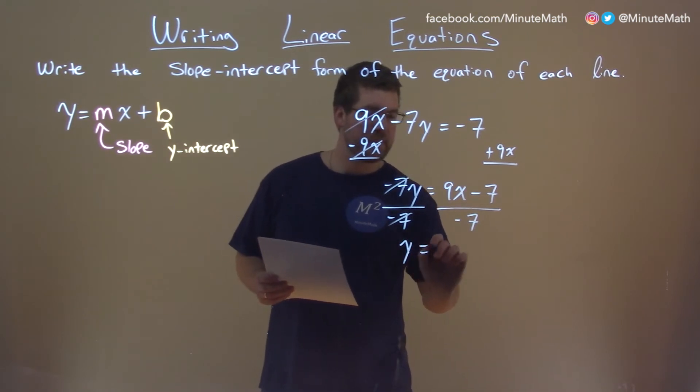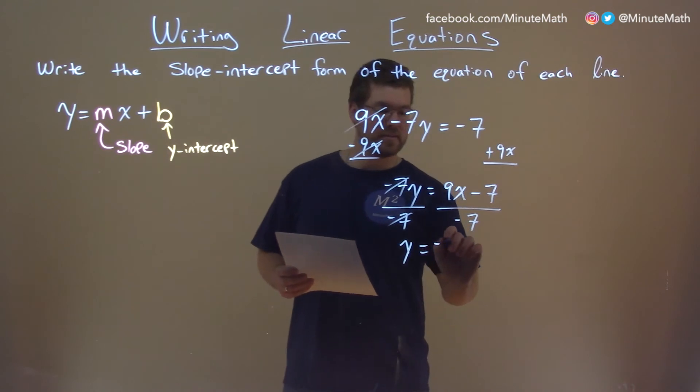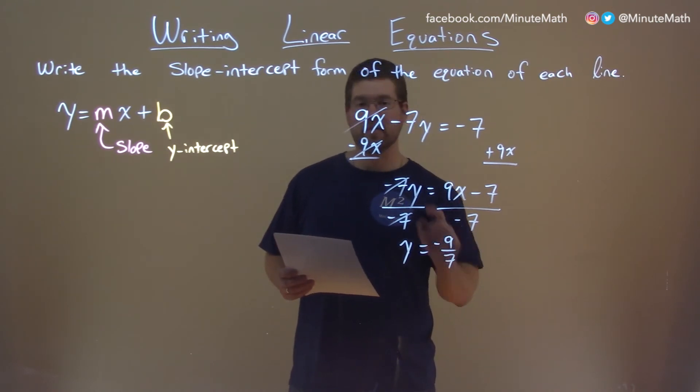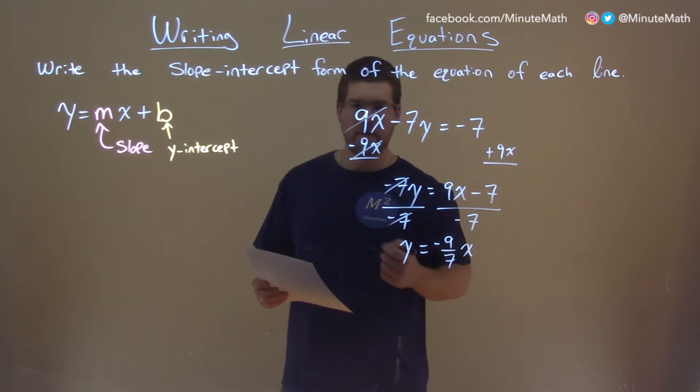So we have y equals, well, 9 divided by negative 7 is just negative 9 sevenths. Keep it as a fraction, makes it easier. x. That's our slope here, the m value.